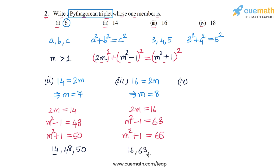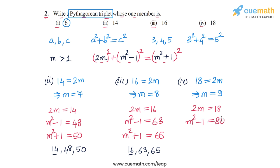For part 4, setting 18 = 2M gives M = 9. The Pythagorean triplet is: 2M = 18, M² − 1 = 81 − 1 = 80, and M² + 1 = 81 + 1 = 82. So the Pythagorean triplet for part 4 is 18, 80, and 82, and 18 is a member of this triplet. This completes question number 2.